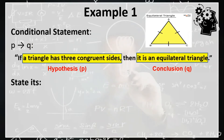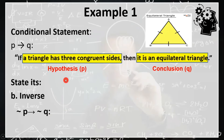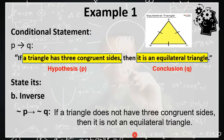Now, let's write the inverse statement of the given conditional statement. For inverse, that is represented by not P implies not Q, meaning you have to get the negation of your hypothesis and the negation of your conclusion. The inverse statement of this conditional statement is: if a triangle does not have three congruent sides, then it is not an equilateral triangle. We simply negate the statement by putting 'not' into the given statement.